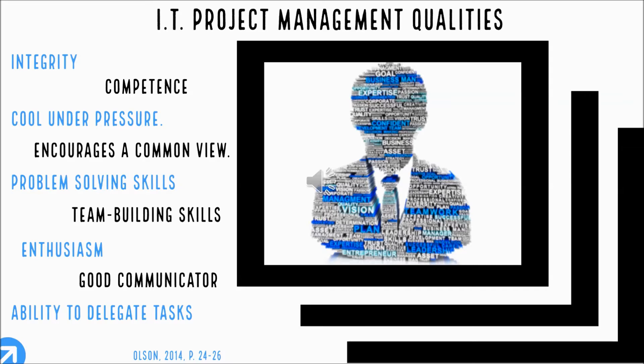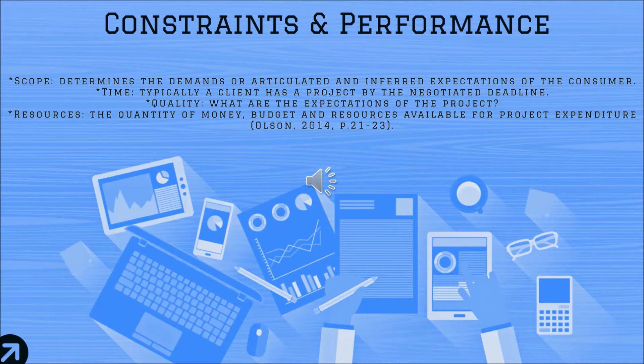IT project managers should have eight qualities when performing IT project manager roles and developing new projects. Key constraints and performance measures are scope, time, quality, and resources. Scope involves all the operations needed to deliver the project. Time allows project managers to provide a start and finish date for the project. Quality ensures the project will be accurate and all standards are met. Resources can be a roadmap for project success.